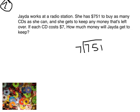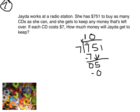When I do this division problem, should I start with seven hundreds, 75 tens, or 751 ones? I can start with seven hundreds. How many times does seven go into seven? Seven goes into seven one time. What's one times seven? One times seven is seven. When I subtract, there's zero left over, and I can bring down my five. How many times does seven go into five? Seven goes into five zero times. Zero times seven is zero, and when I subtract, I have five left over.